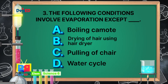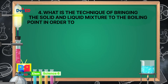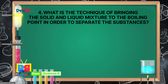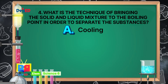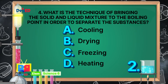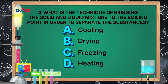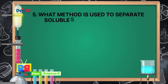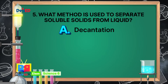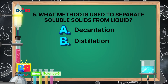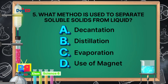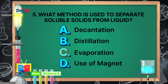Number 4: What is the technique of bringing the solid and liquid mixture to the boiling point in order to separate the substances? A. Cooling. B. Drying. C. Freezing. Or D. Heating. The correct answer is D, heating. Number 5: What method is used to separate soluble solids from liquid? A. Decantation. B. Distillation. C. Evaporation. Or D. Use of magnets. The correct answer is C, evaporation.